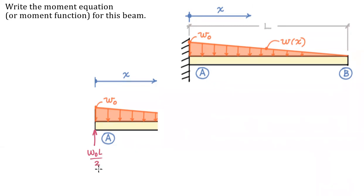That's the area under the curve. So w_0 L over 2, base of the triangle is L, height of the triangle is w_0, one half is because it's a triangle, not a rectangle.